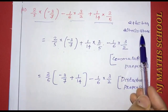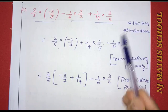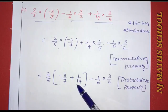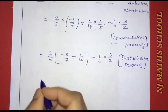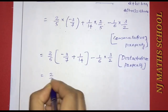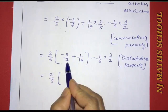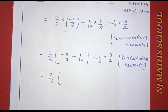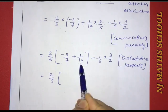Using the distributive property, AB plus AC equals A into (B plus C). That is equal to 2 by 5 into a bracket. The LCM of 7 and 14 is 14.